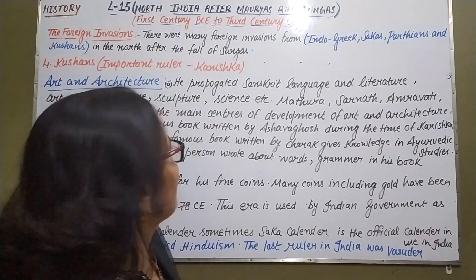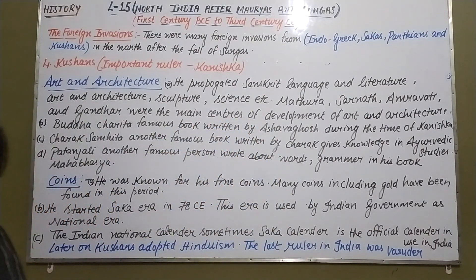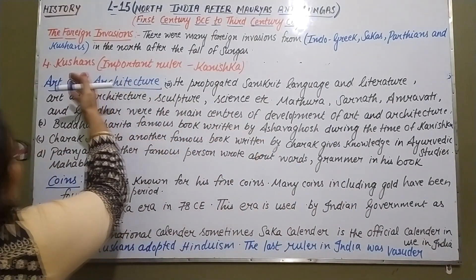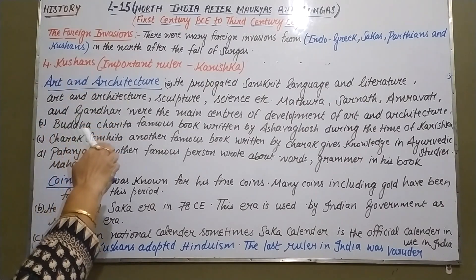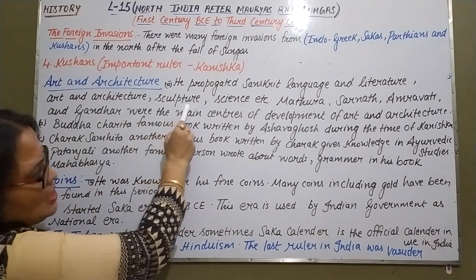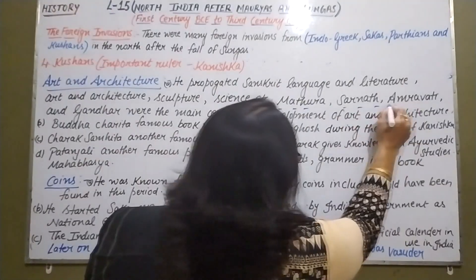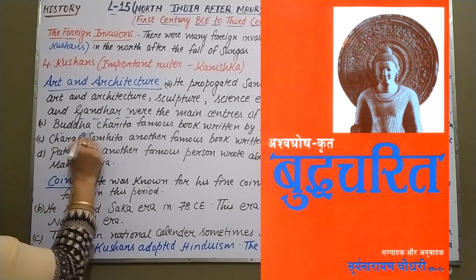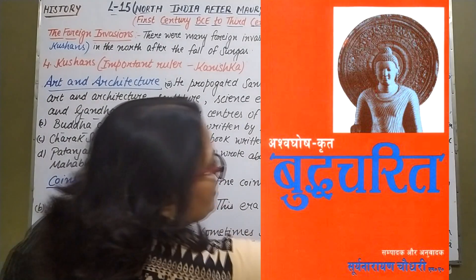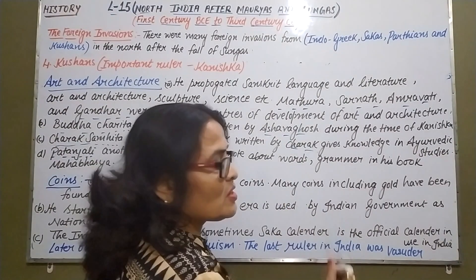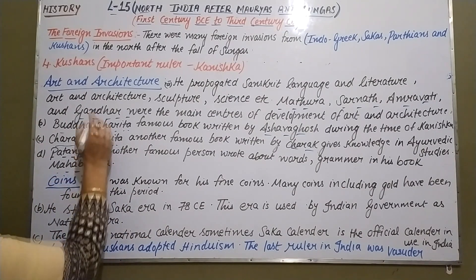Now about art and architecture. Kanishka propagated Sanskrit language and literature. He was a great patron of art, architecture, culture, and science. Mathura, Sarnath, Amaravati, and Gandhara were the main centers of development of art and architecture. The famous book Buddha Charita was written by Ashvaghosha during Kanishka's time. Charaka Samhita, written by Charaka, gives knowledge about Ayurveda. Patanjali wrote about grammar in his book Mahabhashya.